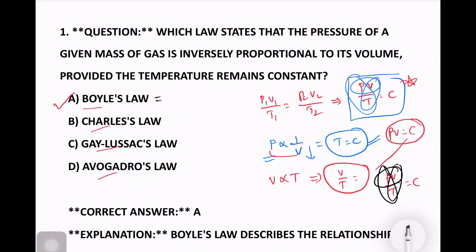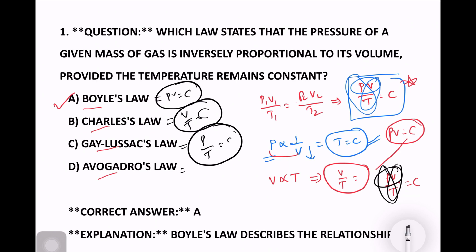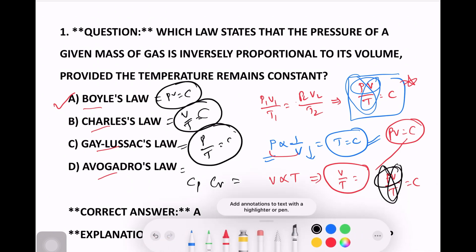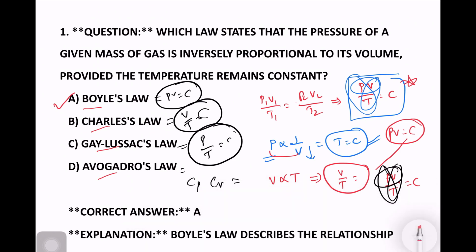Boyle's Law: PV is equal to constant. Charles's Law: V by T is equal to constant. Gay-Lussac's Law: P by T is equal to constant. Avogadro's Law is the remaining one. We will discuss the remaining questions in detail.